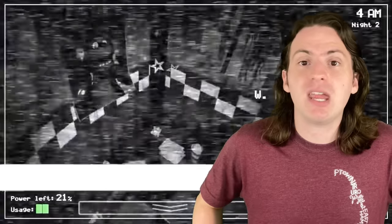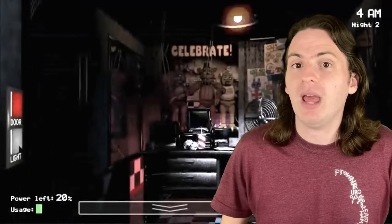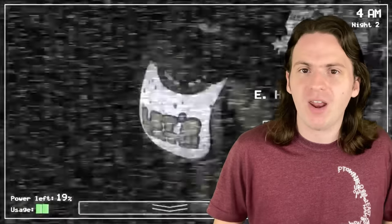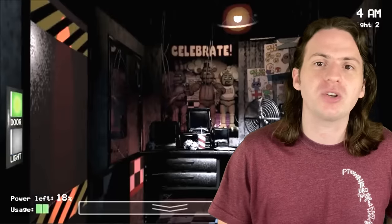You can check the security cameras to keep tabs on the four animatronics, you can turn on the lights in the hallway to see if anyone's about to drop kick you from the shadows, and you can close the doors when Freddy and the gang get a little too close for comfort.